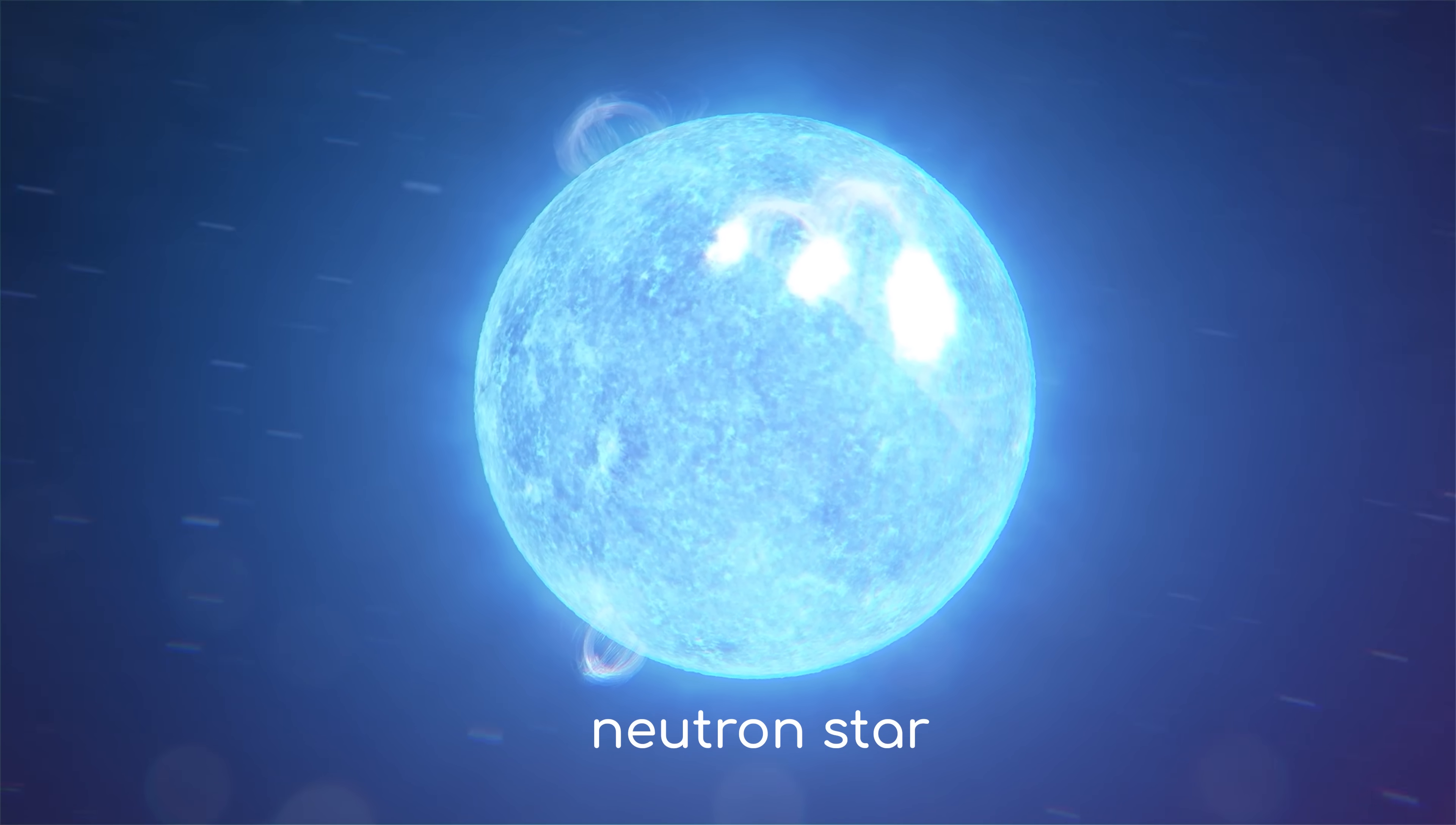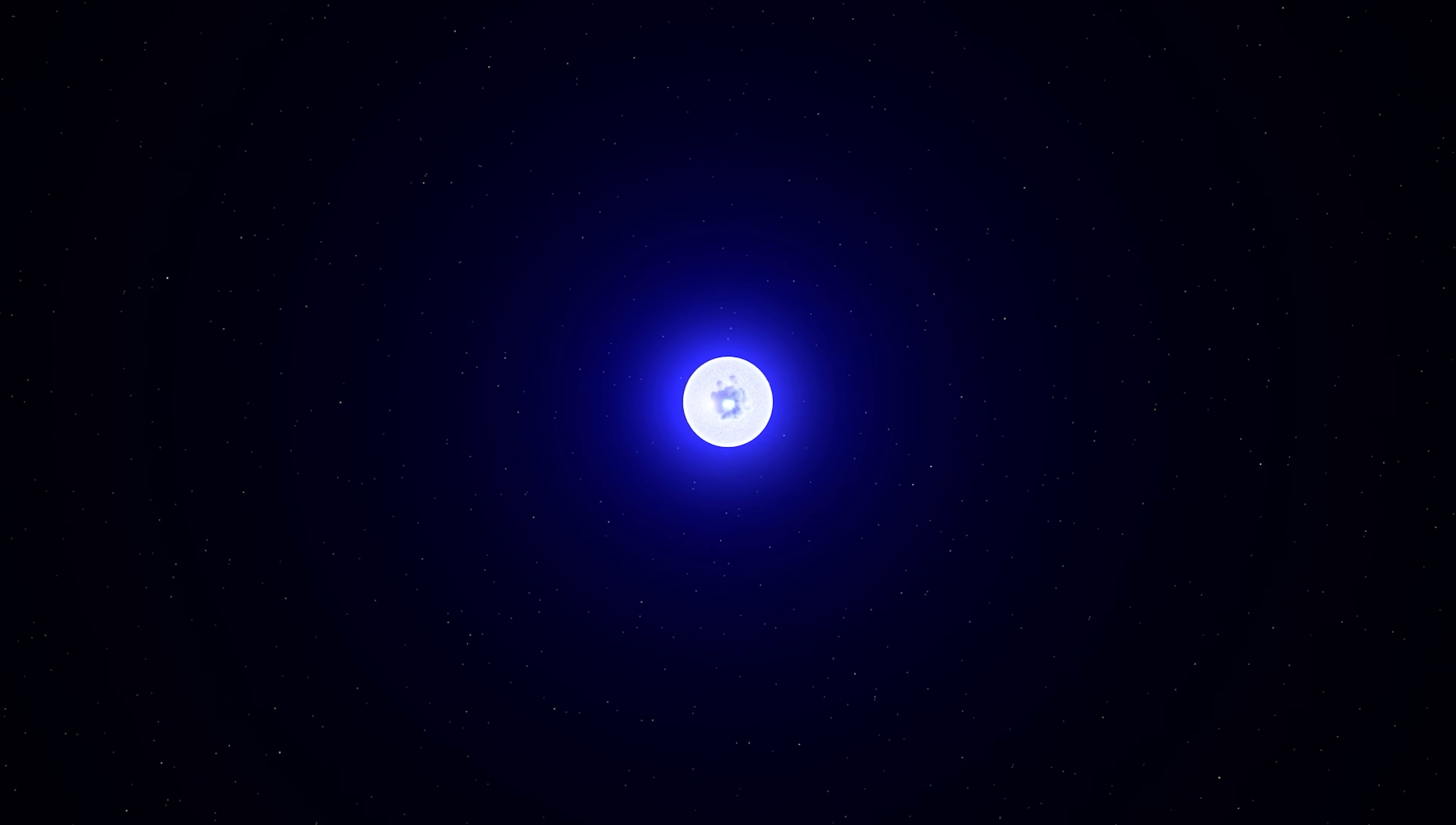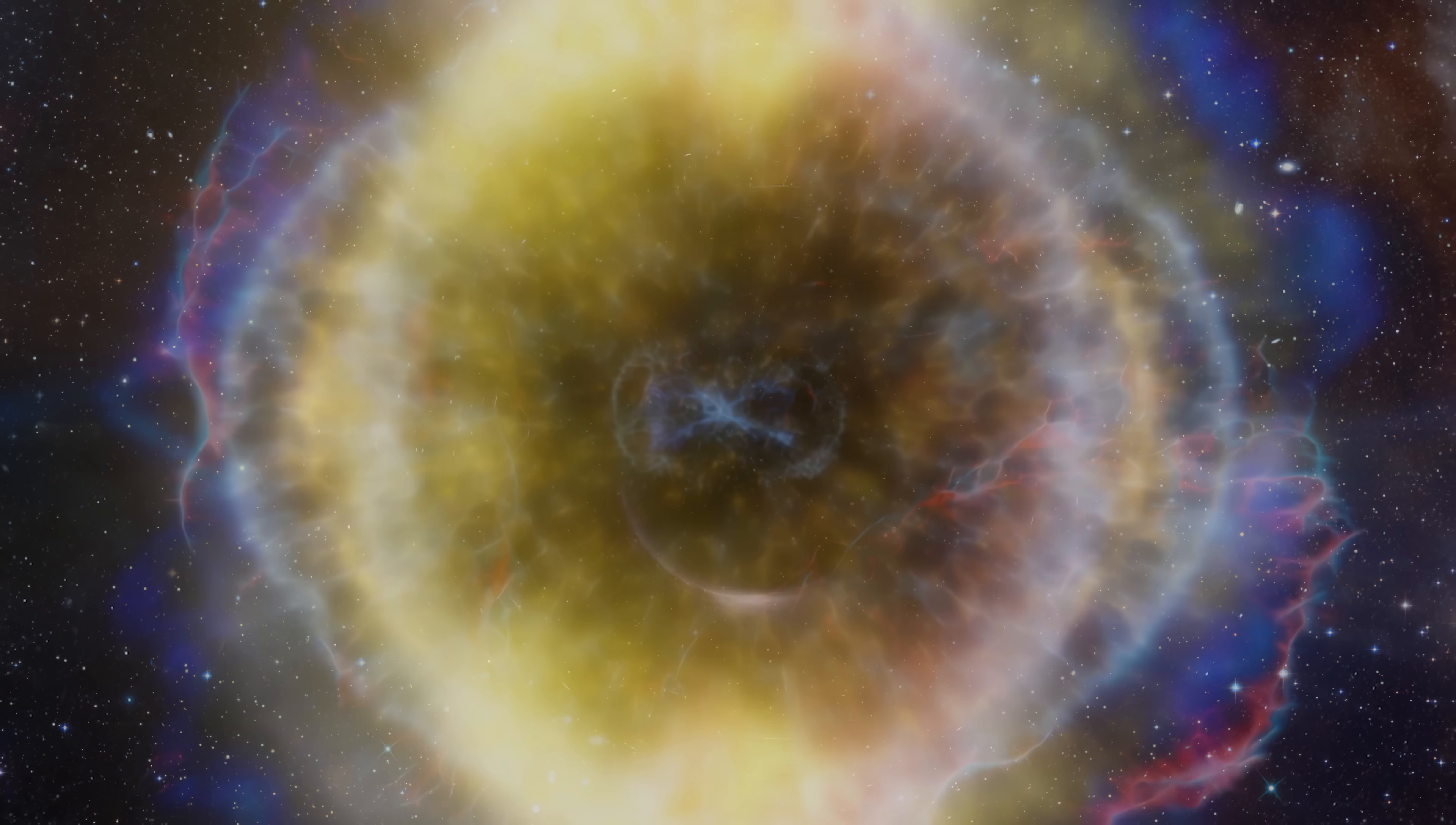So now you might be wondering, is there a maximum mass that a neutron star can have while still being supported by neutron degeneracy pressure? And there is! This time it's about 2.2 times the mass of the Sun. Any heavier than that, and the neutron star would keep collapsing under the influence of its own gravity until—well, actually, not until anything. As far as we know, neutron degeneracy pressure is the strongest possible pressure that ordinary matter can exert, so there's nothing left to prevent a sufficiently heavy stellar remnant from collapsing in on itself forever. This is the fate that might await some of the most massive stars we've observed in the universe. From the perspective of an outside observer, these stars would get so dense that all we'd be able to see is a black hole.